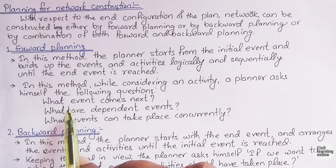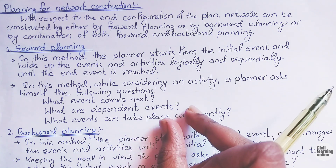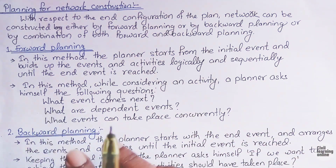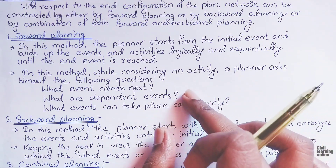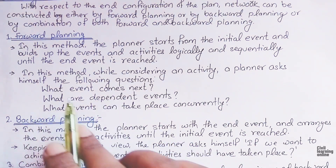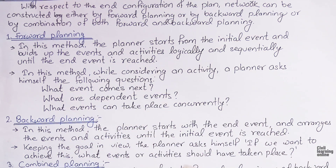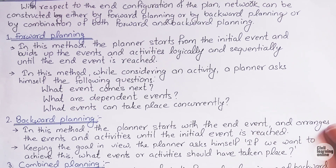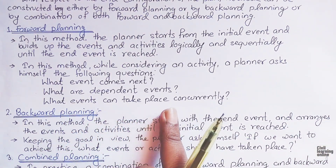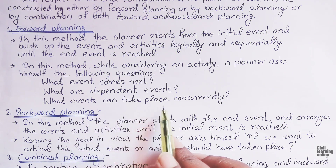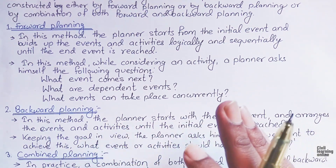While doing forward planning, a planner asks certain questions: first, what event comes next — we need to know what event to perform before starting any other activity; second, what are the different events to be performed while drawing the network; and third, what events can take place concurrently — we need to know what sorts of events can be performed together based on our experience.